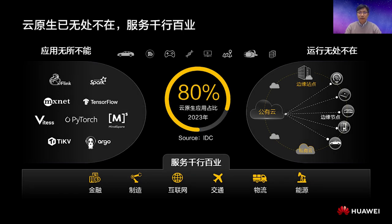We have seen the fast development of cloud-native technologies such as containers and service mesh. Starting from the internet sector, customers are coming from more and more industries such as finance, transportation, manufacturing, and energy. They embrace cloud-native and seek digital transformation. According to IDC, the proportion of cloud-native applications will reach 80% by 2023.